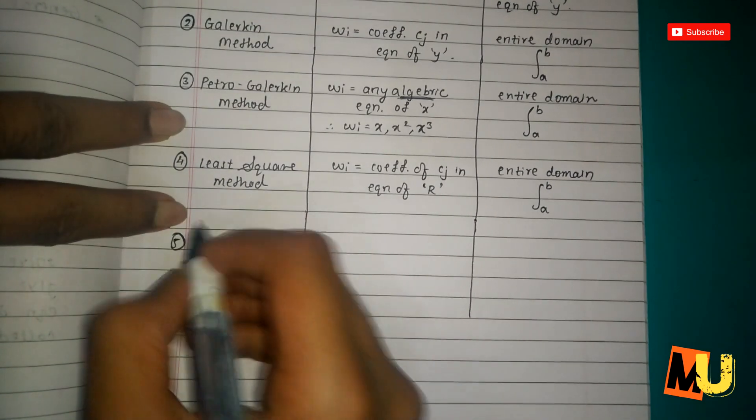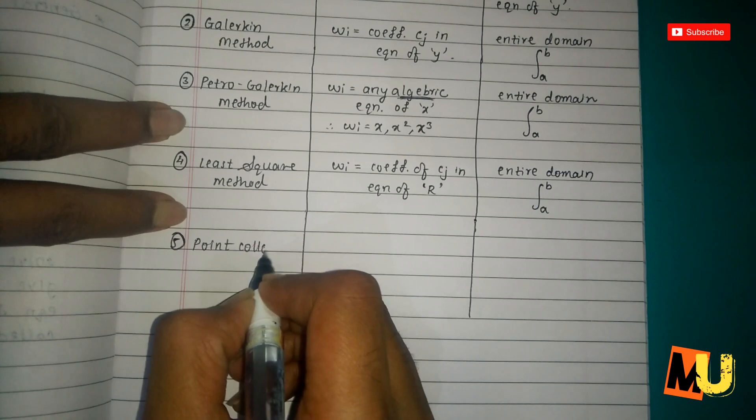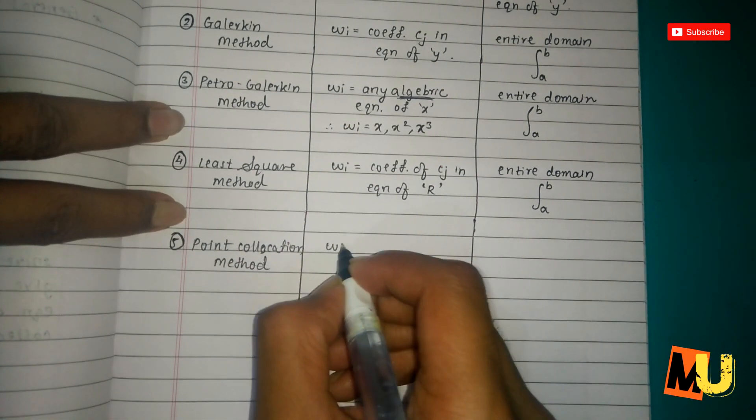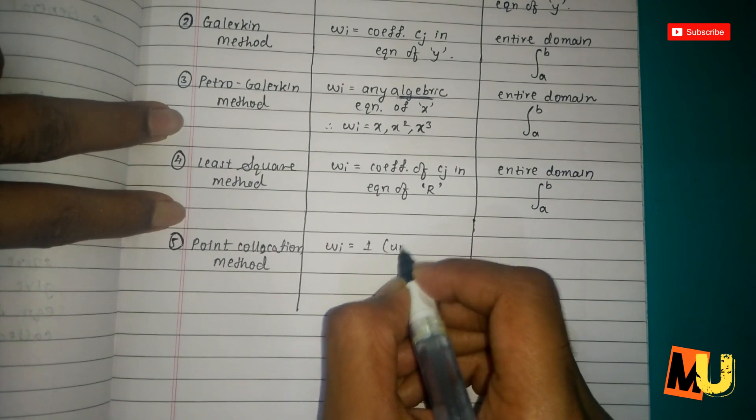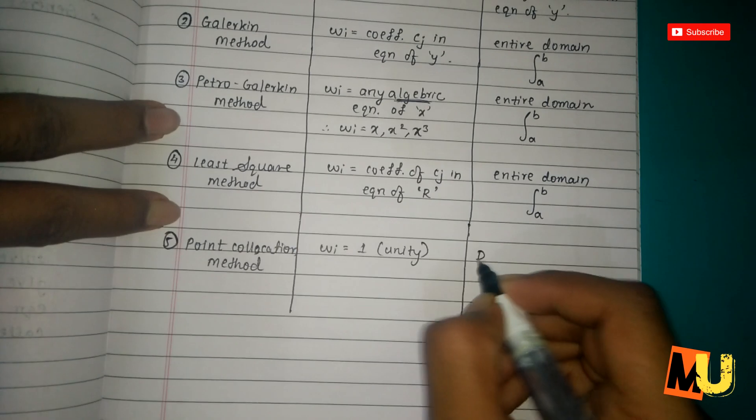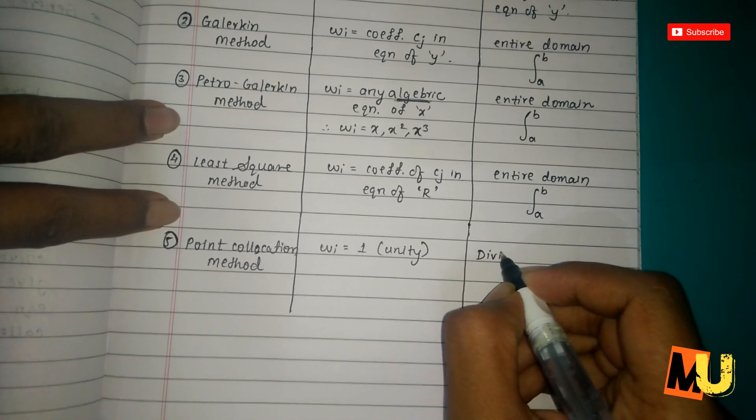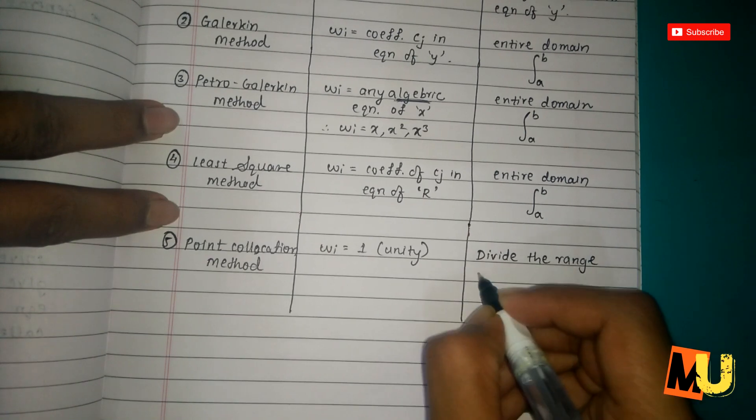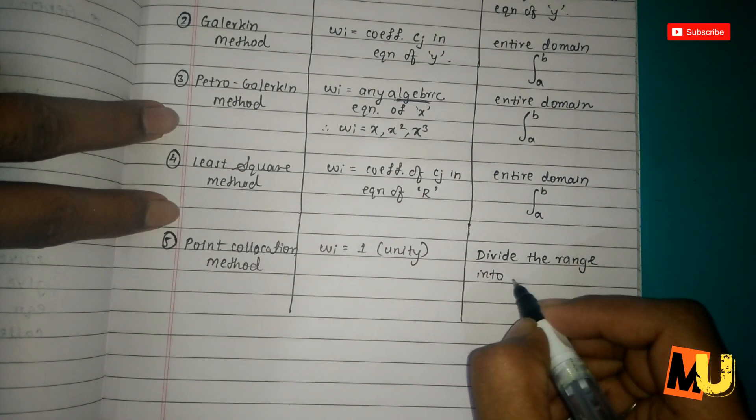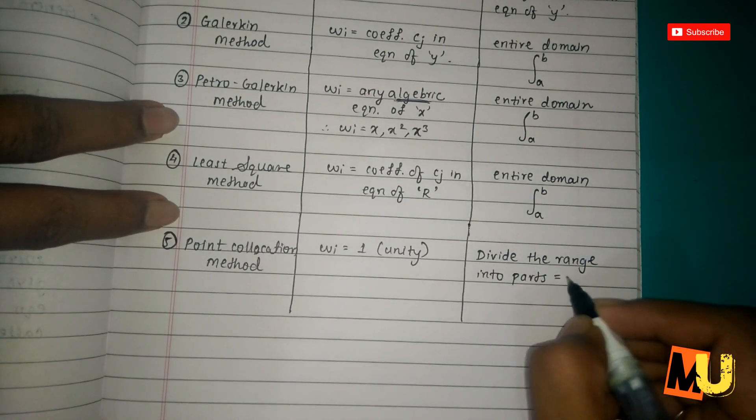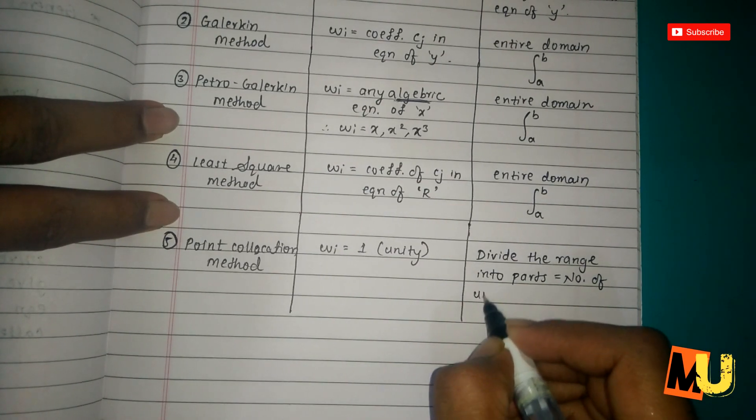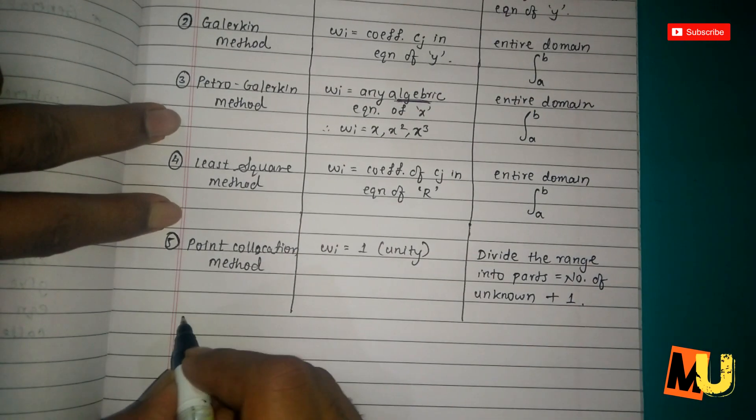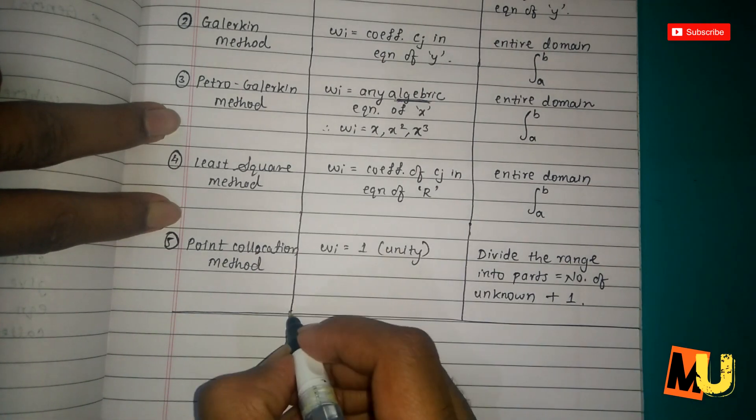And the last method, that is point collocation method. w_i equals 1, that is unity, but in limits of integration, divide the range into parts, that is number of unknown plus one.